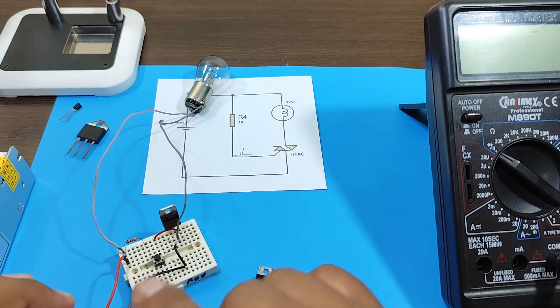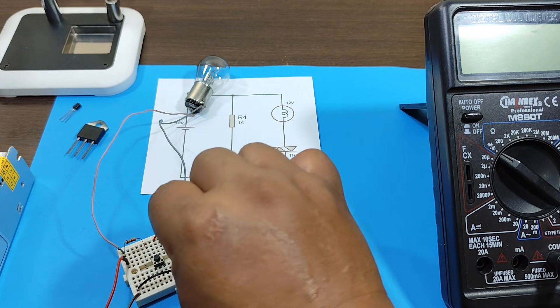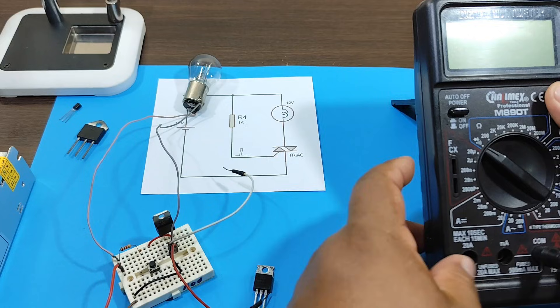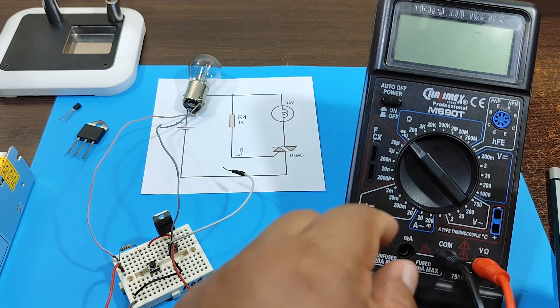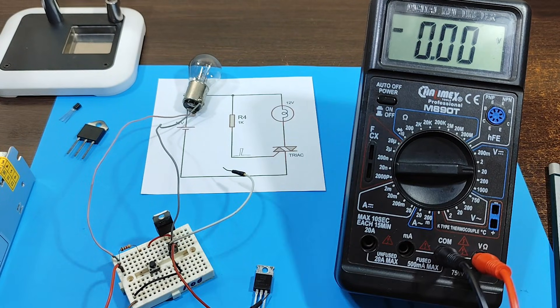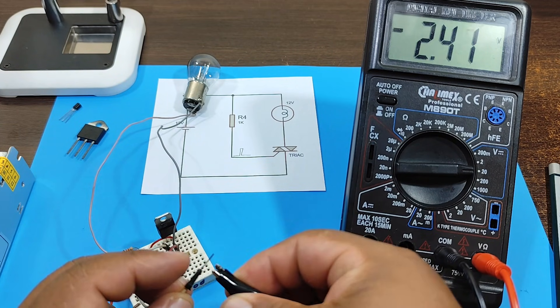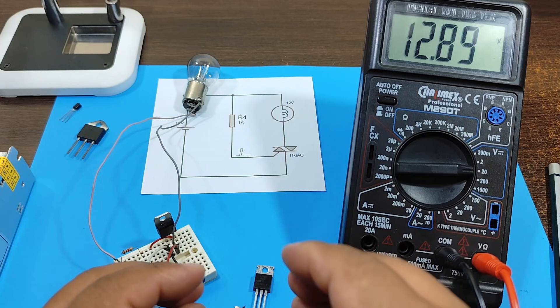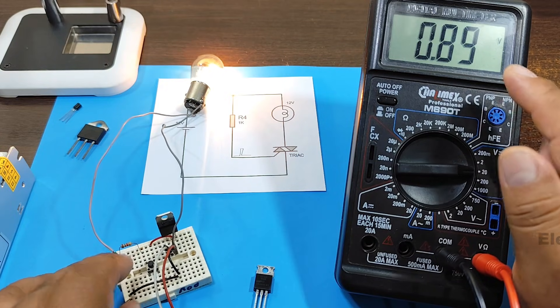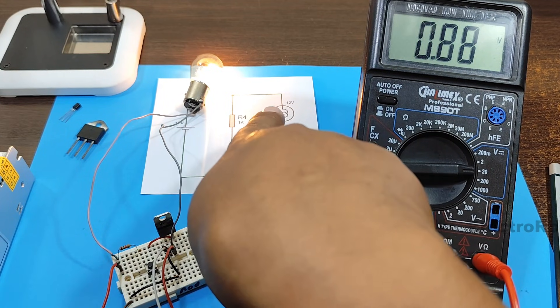Now let's measure the voltage between T1 and T2. We set the multimeter to DC voltage. We press. And as you can see, the voltage between T1 and T2 drops to almost 0.9 volts.